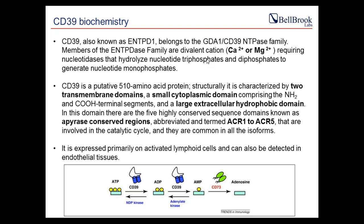CD39 is the prototype ENTPD1, the first of the eight nucleotidase enzymes to be cloned and sequenced. It requires divalent cations — calcium and magnesium — for activity and can bind triphosphate and diphosphate to generate monophosphate. Structurally it has approximately 510 amino acids, two transmembrane domains, a small cytoplasmic domain, and a large extracellular hydrophobic domain containing five apyrase conserved regions (ACR1–ACR5), which are critical for the catalytic cycle and nucleotide binding.